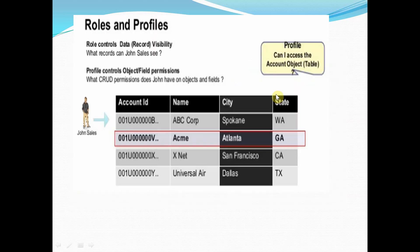The main topic here is how a profile controls object level access. Consider a typical account table with account ID and name. The profile controls whether a user can even access that object at all, using CRUD permissions — create, read, update, delete — similar to Oracle or other systems. Only if the user has those permissions will they have access to that object.